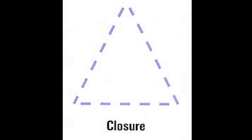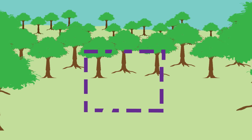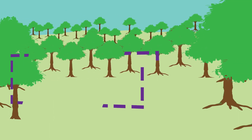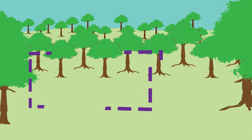Sometimes things will get in the way of what we're looking at, or it will be a little blurry or hazy, so parts may be missing. As such, we'll tend to fill in the missing info to have a cohesive object — this is known as closure. We're closing the gaps to perceive a solid object.